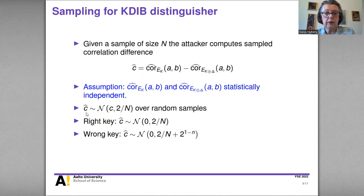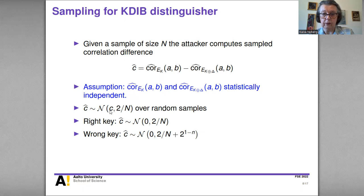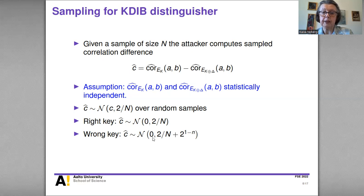Over random samples, the correlation is normally distributed with expected value C and variance 2 over N. Combining the distribution of C over the keys with the distribution of C-hat over random samples, for the right key where we expect the KDIB property, C-hat is normally distributed with mean 0 and variance 2 over N. For the wrong key, the distribution is also normal with mean 0, but variance slightly larger: 2 over N plus 2 to the power of 1 minus n.